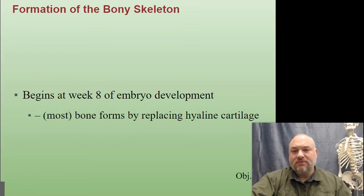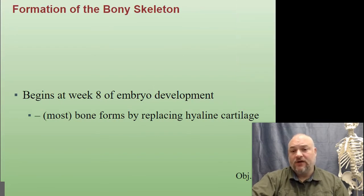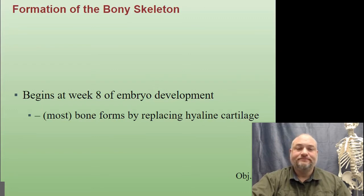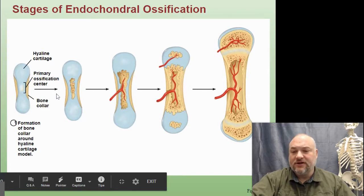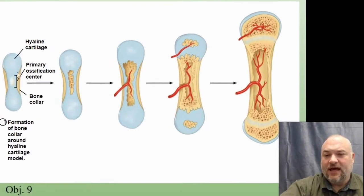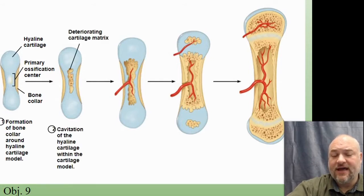Bone formation begins at around week eight of embryological development, so fairly early on. Most bone forms by replacing hyaline cartilage. Here we have an early embryo that's mostly hyaline cartilage, and then the bone starts to form and slowly replaces the cartilage — a little at a time. Cartilage degrades, bone replaces it, more cartilage decays, bone replaces it again.